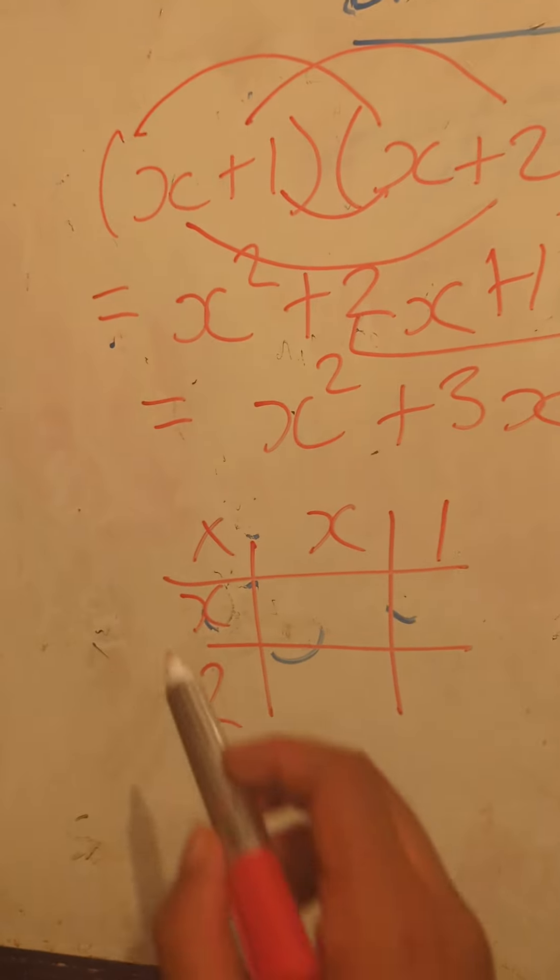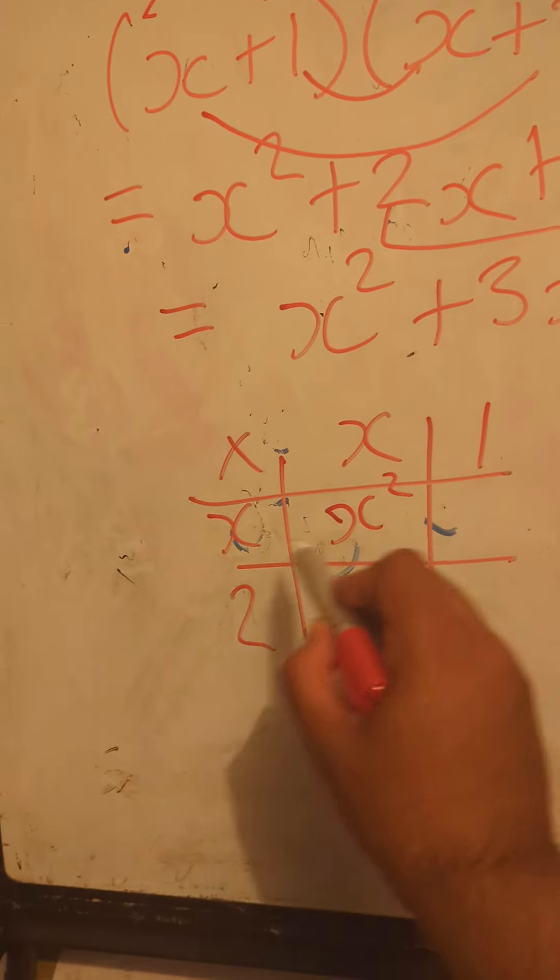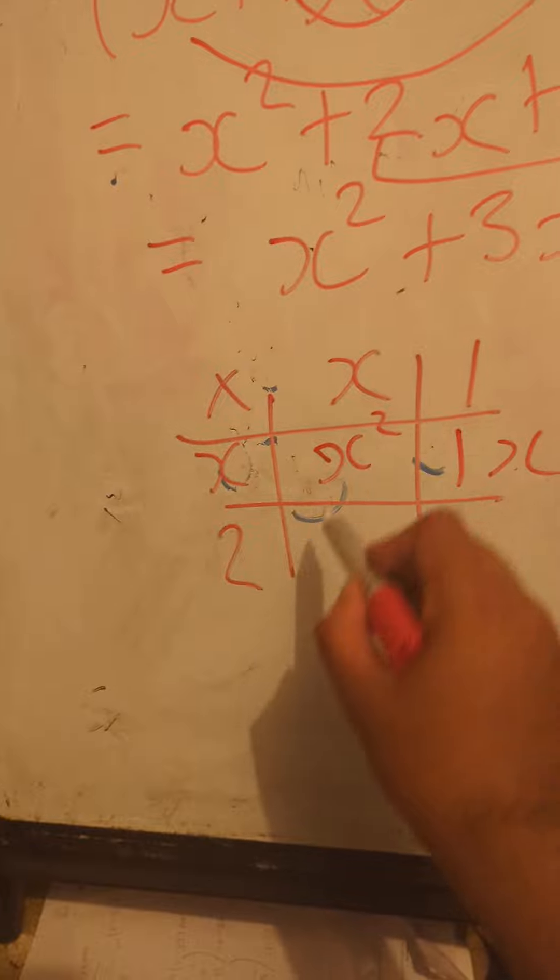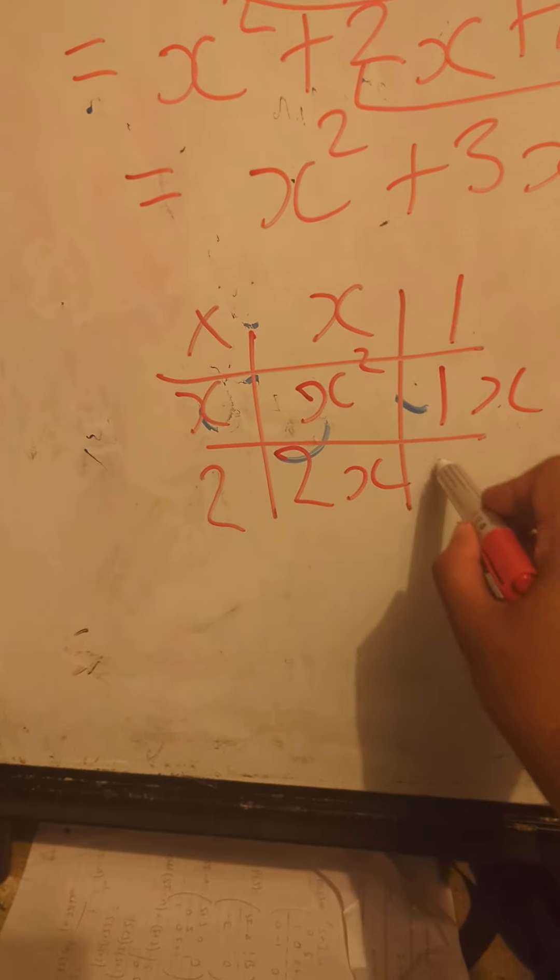x times x is going to be x squared. x times positive 1 is going to be plus 1x. 2 times x is going to be 2x, and then 2 times 1 is going to be 2.